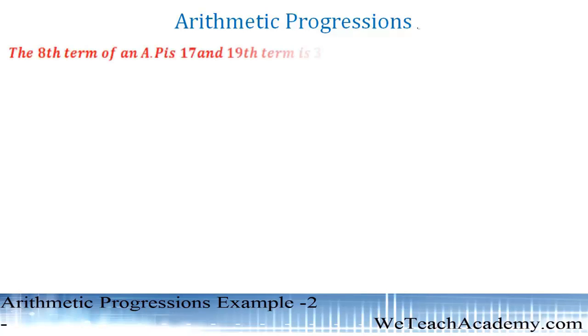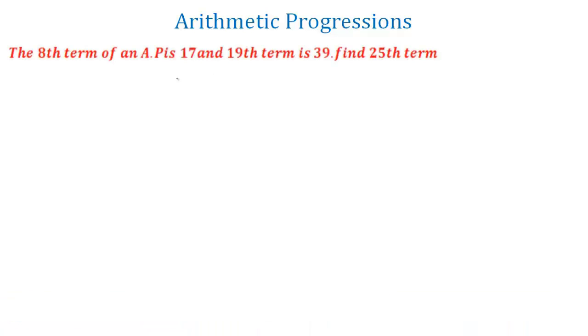Here we have a simple example. Given that the 8th term of an arithmetic progression is 17 and the 19th term is 39, we have to find the 25th term.